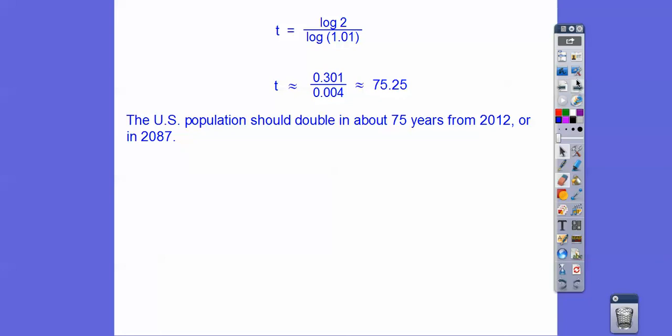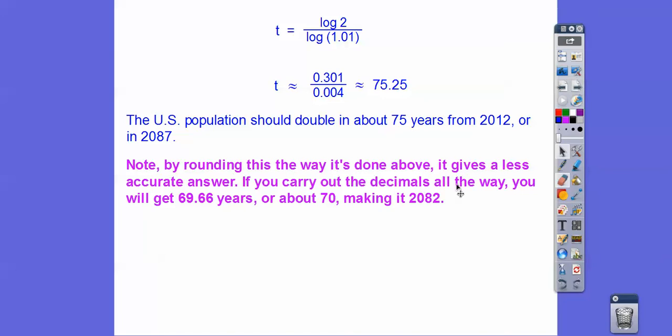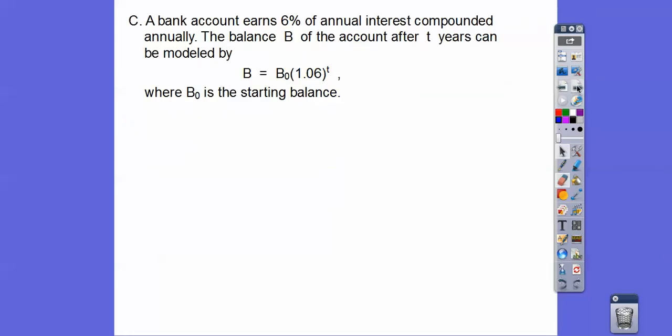From 2012, the population is going to double, so that would be up at 2087. Now, if you carry those decimals out in your calculator a little bit more, you'll find it gets us almost 70 years, making it 2082. This is the more accurate answer. Your book rounded a little bit early. Our books make lots of errors, we've discovered.